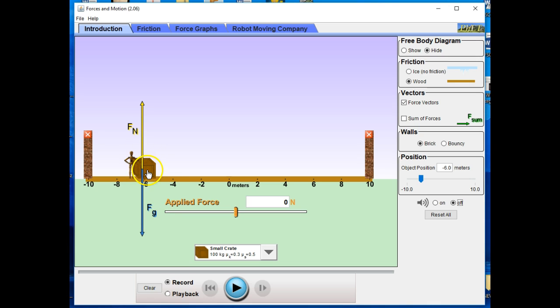So this would be the normal force on the box by the floor, and then we have the force of gravity on the box by the Earth. We're going to add a force to the right, but with this one, we're also going to tell you that there is friction. So you'll see that we've chosen wood as our floor instead of ice. If we did ice, there wouldn't be any friction at all.